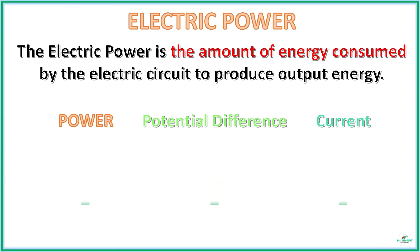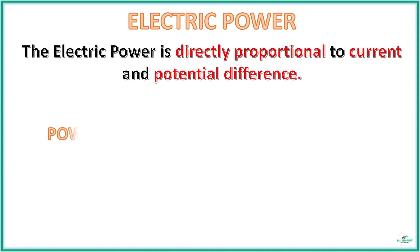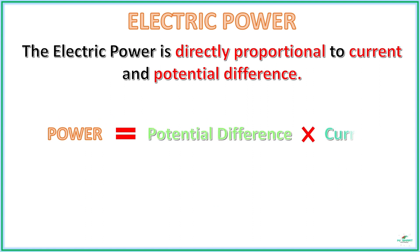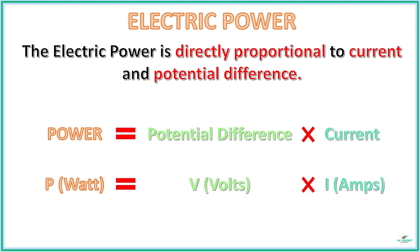When potential difference and current are increased in an electric circuit, the power consumption will also increase. Hence we can say they are directly proportional. From this, we can say the theoretical power is the product of potential difference and current.